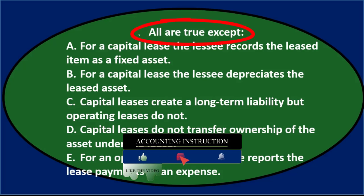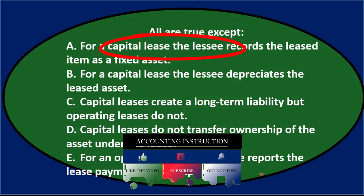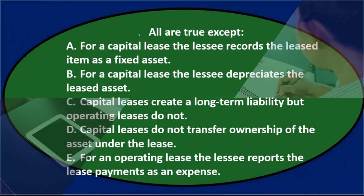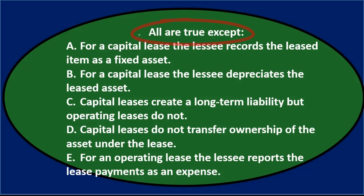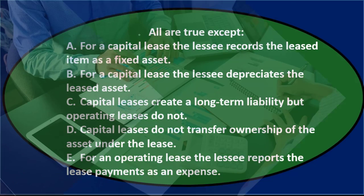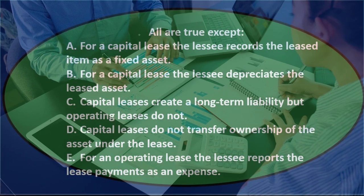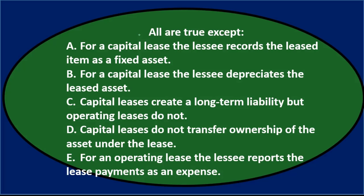Using the process of elimination — we're talking about operating leases versus capital leases. A capital lease, in substance over form, is actually a purchase. In form it was set up as a lease, but we have to treat it like a purchase. An operating lease is like a normal lease where you just have lease payments; a capital lease is pretty much like you bought it.